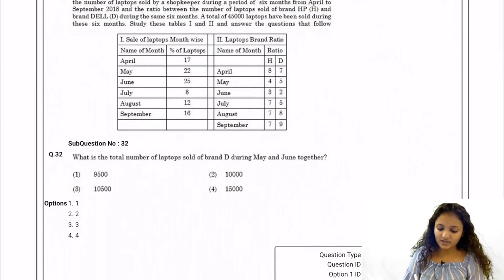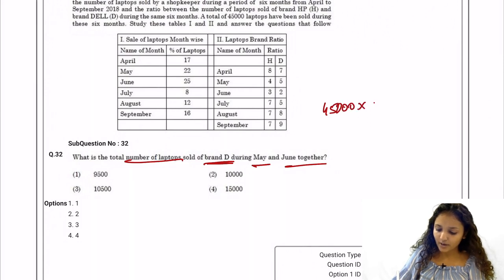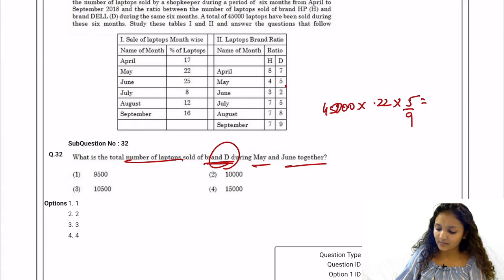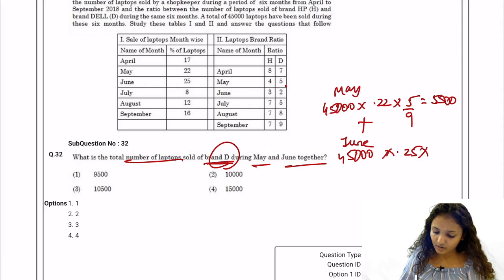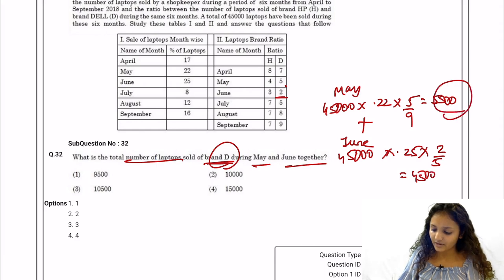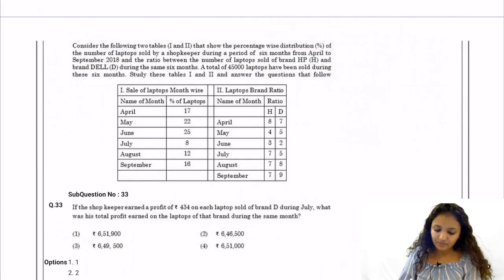Question 32: Total number of Dell laptops sold during May and June. For May: 45,000 × 0.22 × 5/9 = 5,500. For June: 45,000 × 0.25 × 2/5 = 4,500. Total: 5,500 + 4,500 = 10,000. Option two is the correct answer.